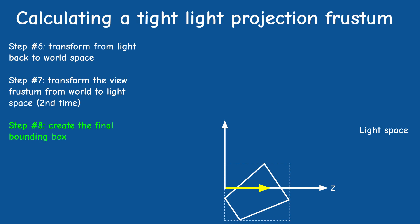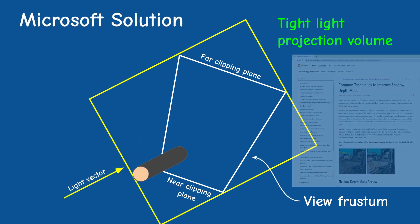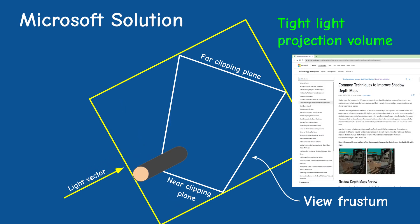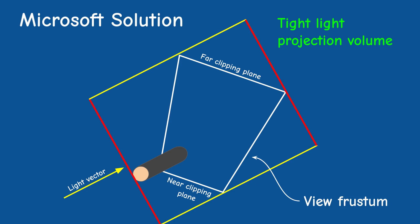We use this second matrix to transform the view frustum from world to light space again. The first time we assumed the light was at the origin, but now we know exactly where it is so this does translation and rotation instead of just rotation. We then calculate a final axis-aligned bounding box in light space to create the orthographic projection matrix. If everything is done correctly the near z of this bounding box will be zero and the box will be symmetrical on both x and y. Note that this solution is not perfect — an object outside your frustum that still casts a shadow inside will be missed. Microsoft's suggested solution creates the left, right, top and bottom planes from the view frustum and derives near/far by intersecting with the actual scene, but that is more complex.